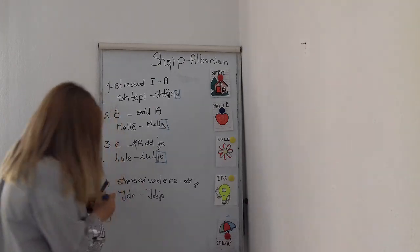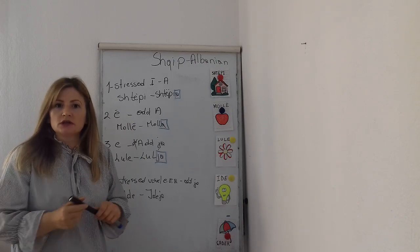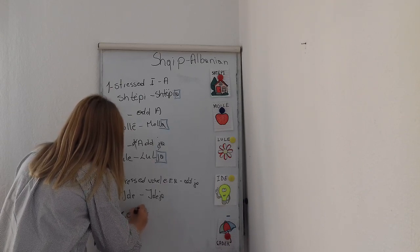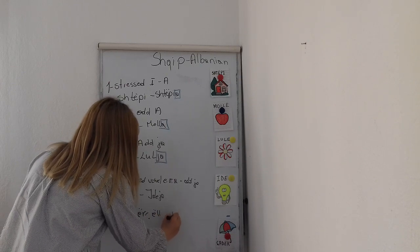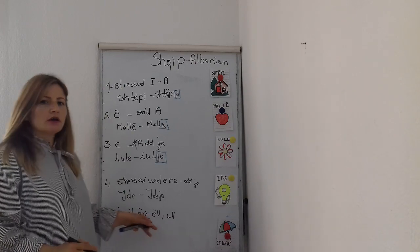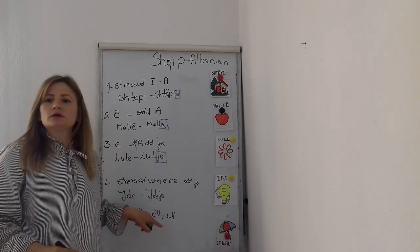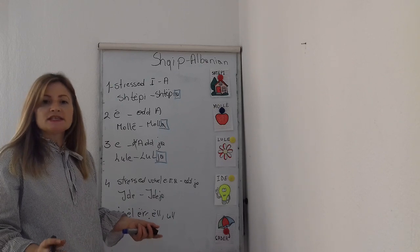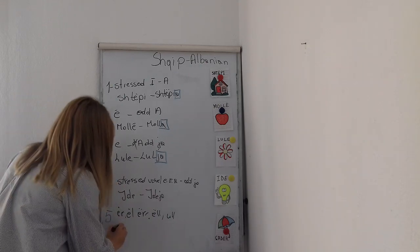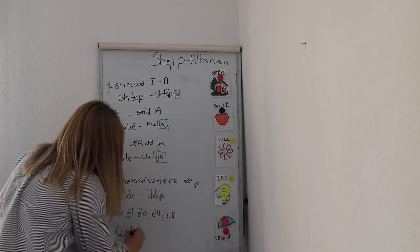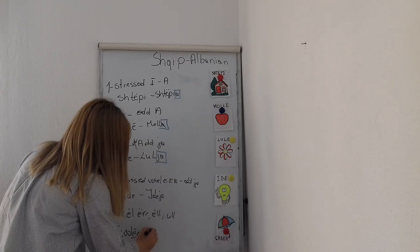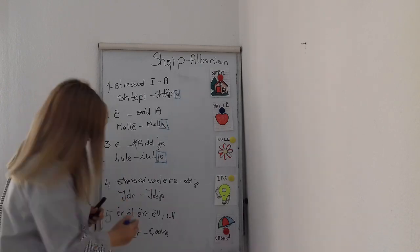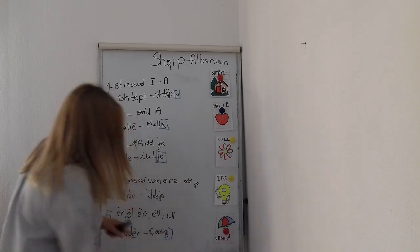The fifth rule: there are nouns that end in a consonant — specifically those ending in ër or ël. To make the definite form, we delete the E and add A after the consonant. For example, 'Çadër' means 'umbrella' — we delete the E and add A: 'Çadra.' Other words in this group will be listed in the description below so you can check them.